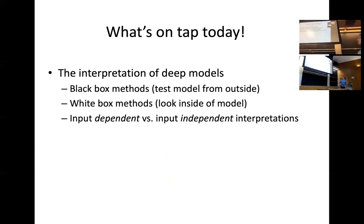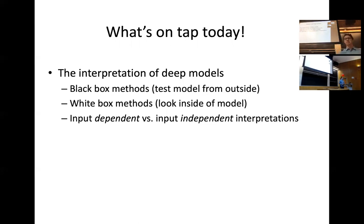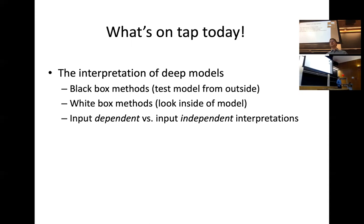At a high level, we're going to talk about different types of interpretability methods. The first are black box methods, which look from outside the model — you can't look inside at specific weights, you just query the model on a particular example and observe its prediction. In contrast, white box methods enable us to look inside and study, for example, the convolutional filters and what they have learned. Separately, we have input-dependent and input-independent explanations. Input-dependent interpretations explain the prediction on a particular input — why did the model predict dog on this specific image? Input-independent interpretations generally show what the model has learned without requiring a specific input.